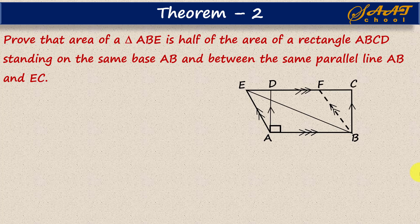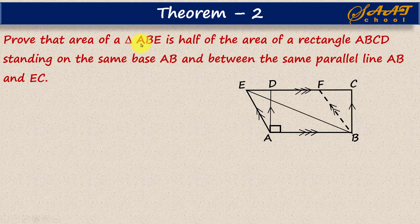So we draw triangle ABE and rectangle ABCD, standing on the same base AB and between same parallel lines. The remaining process follows what we did in Theorem 2 earlier. We draw a parallel line BF, with BF parallel to AE. Remember to use the same names given in the question. Triangle ABE and rectangle ABCD stand on the same base AB and between same parallels AB and EC. Follow the same steps, just changing the names.